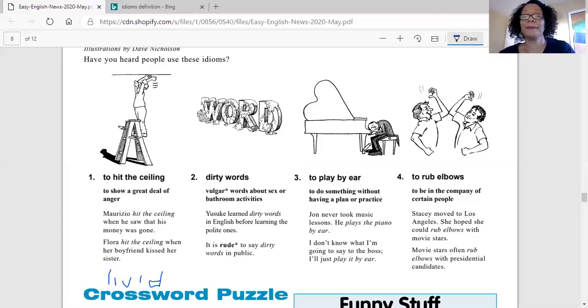Number three, play it to play by ear. Here we have a man bending over piano and touching the piano keys with his ear. To play by ear doesn't mean to take your ear and start hammering down on something, but what it means is to play something without having a plan or practice.